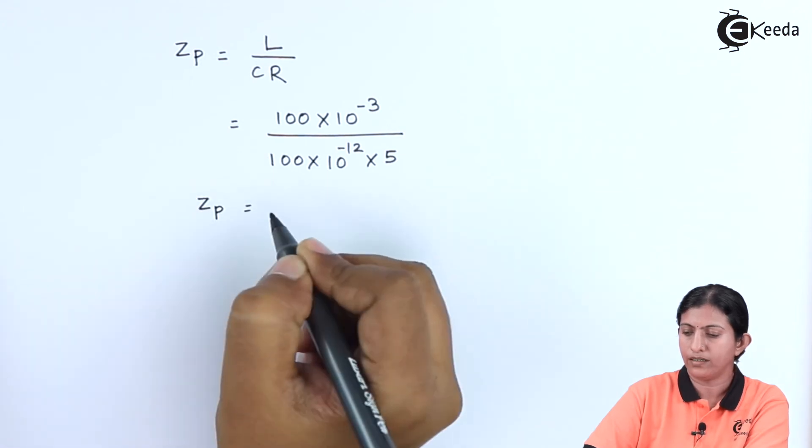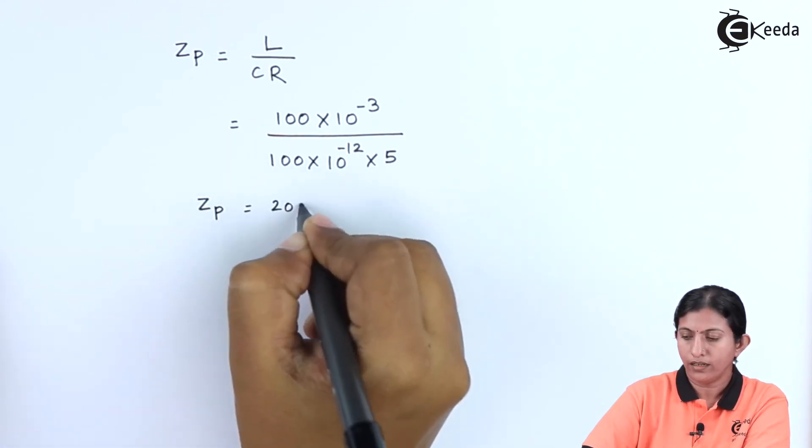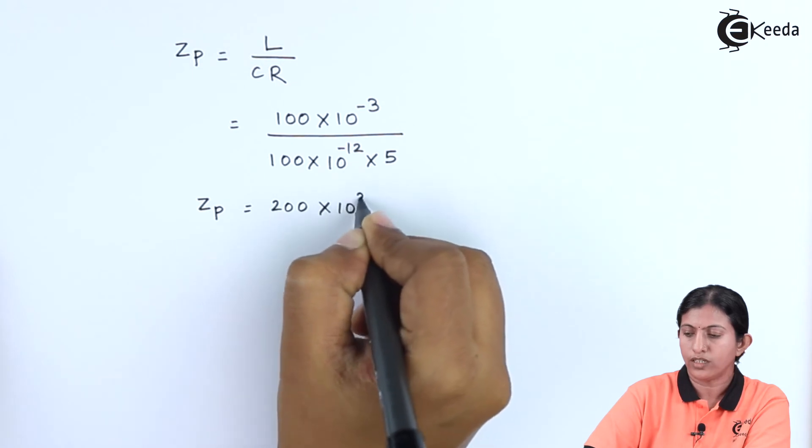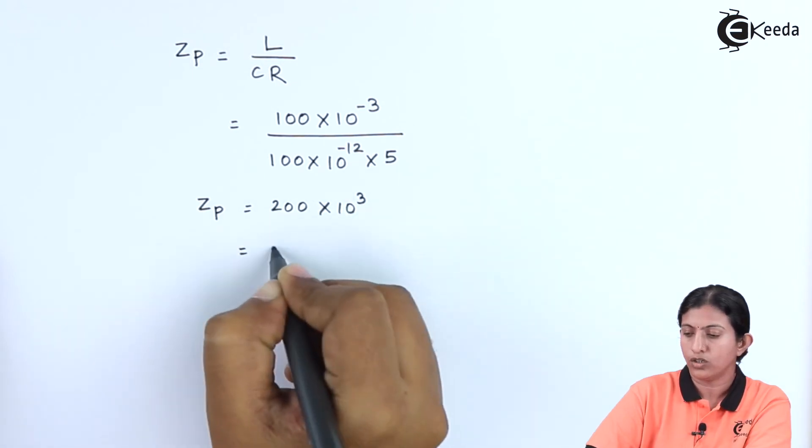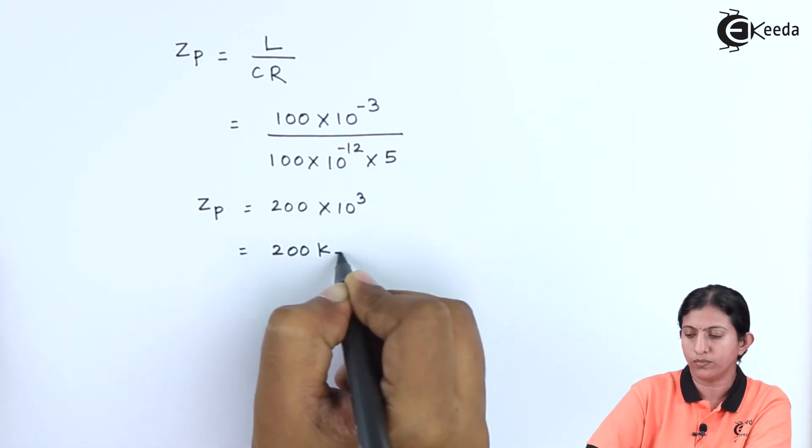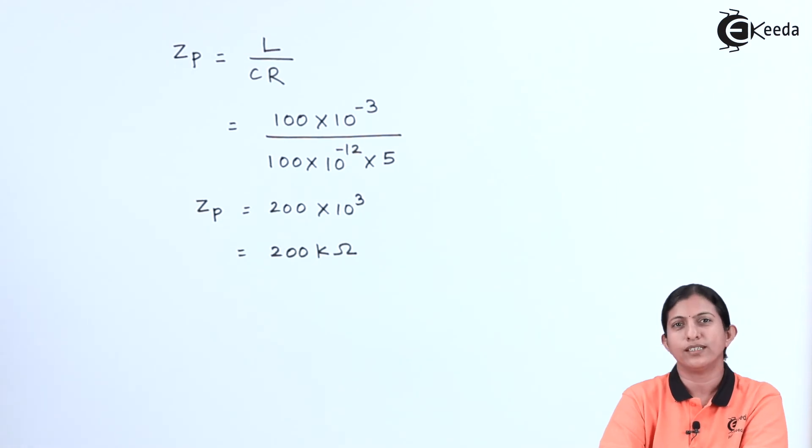So the parallel impedance is equal to 200 × 10³, that is 200 kOhms. Thank you friends for watching this video, stay tuned with eKida and subscribe to eKida.